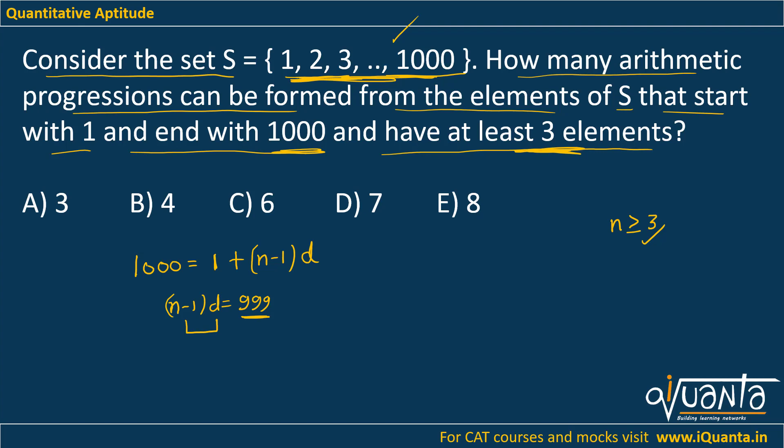So if I find out the factors of 999, 999 is equal to 3 cubed times 37. So total number of factors of 999 will be (3 plus 1) times (1 plus 1), which gives me 8.